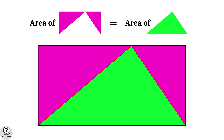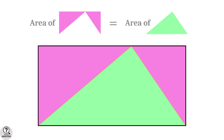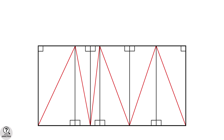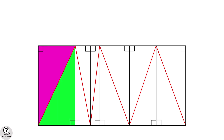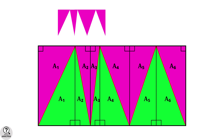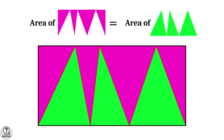In general, consider the rectangle and draw any number of arbitrary zigzag lines. From each joining point of two lines, draw vertical lines, splitting the whole figure into groups of right triangles. Each pair of right triangles has equal area — say a1, a2, a3, a4, a5, and a6. The total area of the pink region equals a1 plus a2 plus a3 plus a4 plus a5 plus a6, and the green region's total area is exactly the same.